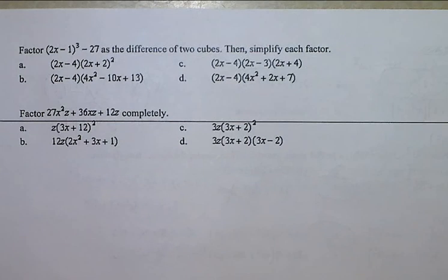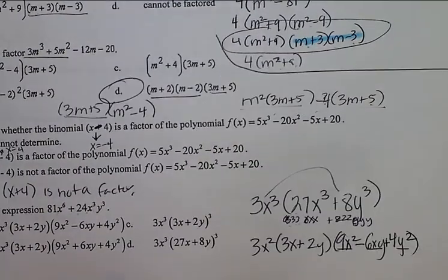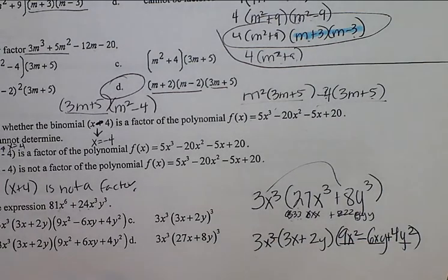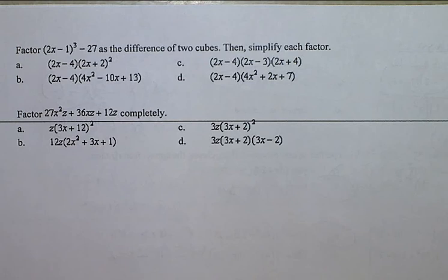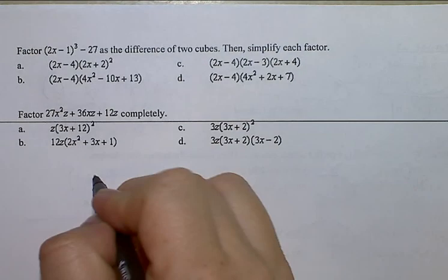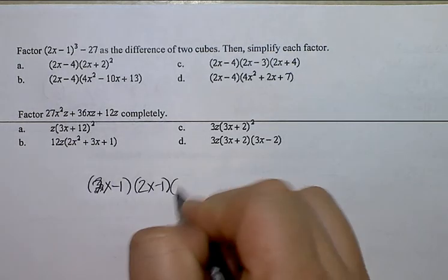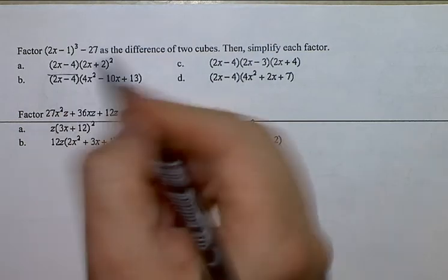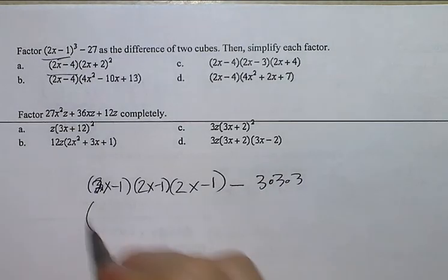I'm going to keep going. In the back, we are going to factor this as a difference of cubes. So I have this quantity three times. This quantity three times, minus 27 three times.